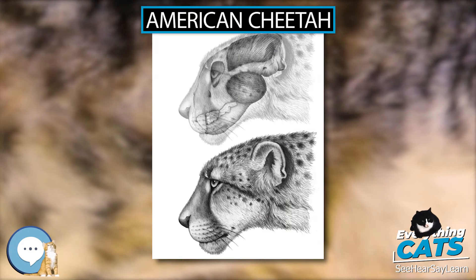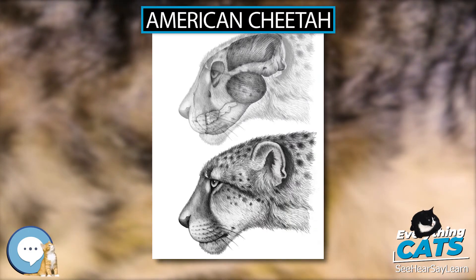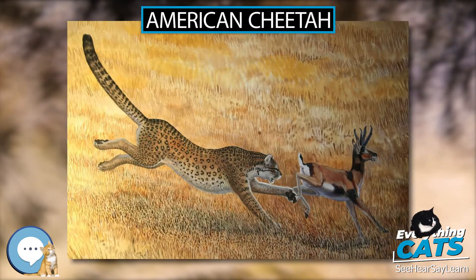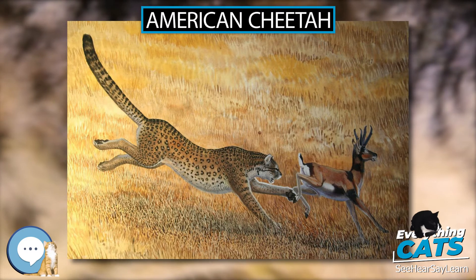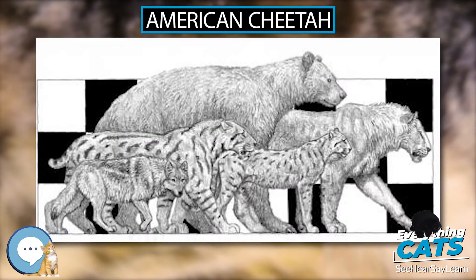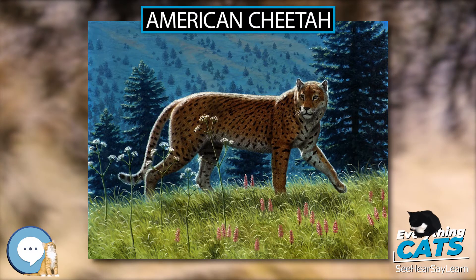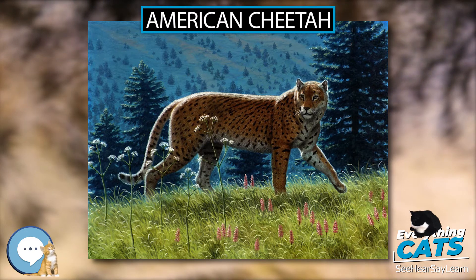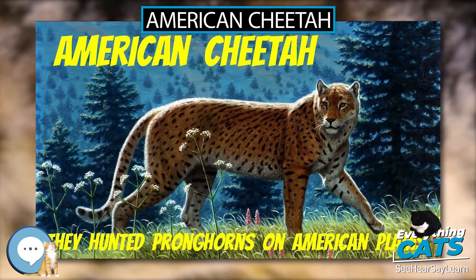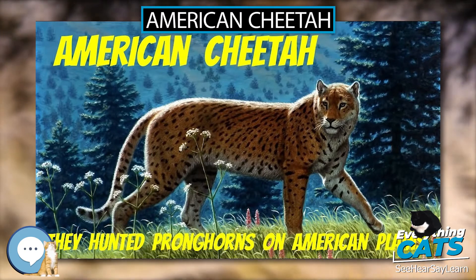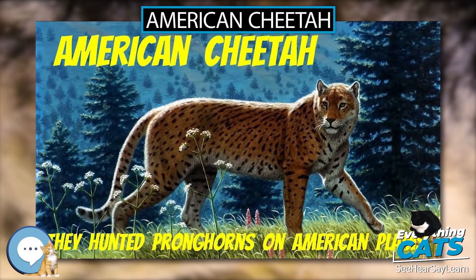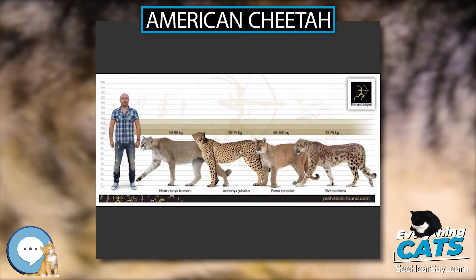These were larger than a modern cheetah and similar in size to a modern northern cougar. Body mass was typically around 70 kilograms (150 pounds), with a head and body length of 170 centimeters (67 in), tail length around 92 centimeters (36 in), and shoulder height of 85 centimeters (33 in). Large specimens could have weighed more than 95 kilograms (209 pounds).